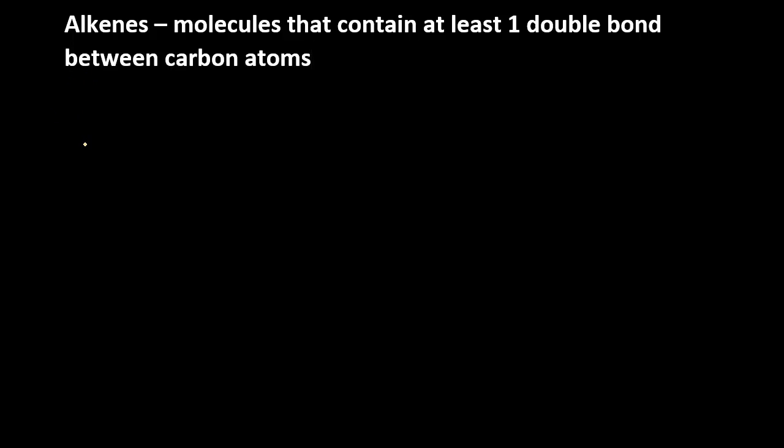So let's look at just a random sample molecule here. We'll draw butane. Butane has four carbons, and we'll fill up all the hydrogens so that each carbon has four bonds. So here's butane.